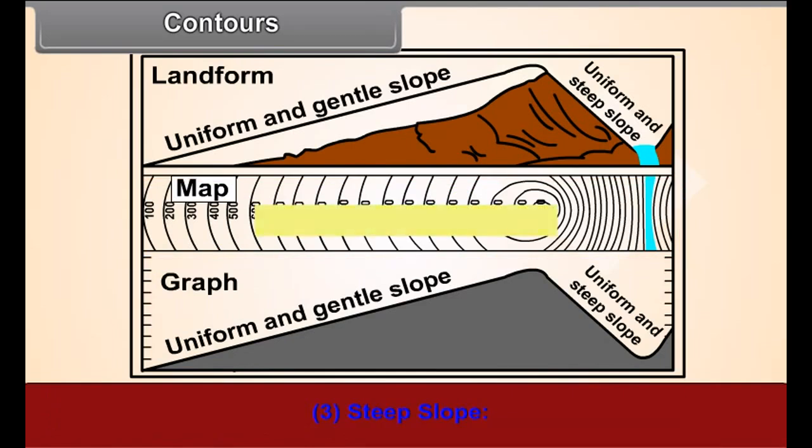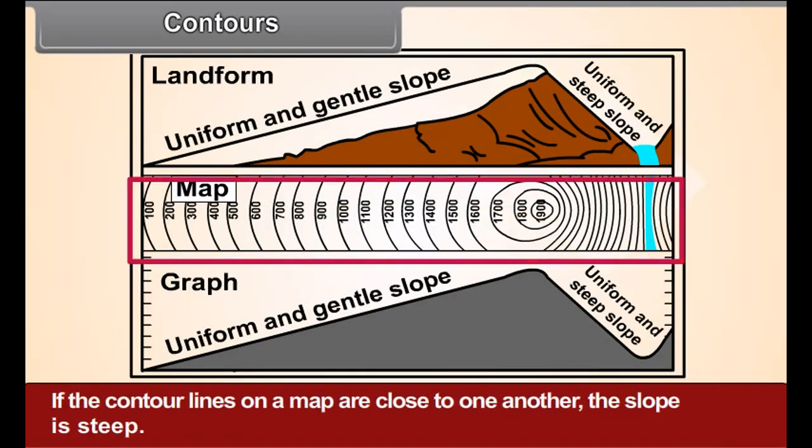Number 3. Steep slope. If the contour lines on a map are close to one another, the slope is steep.